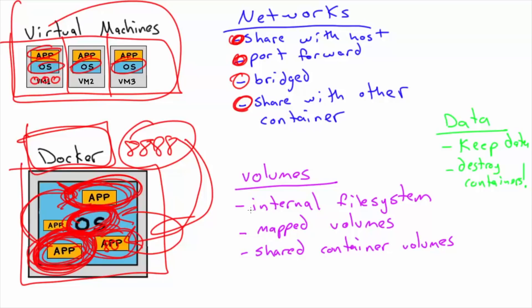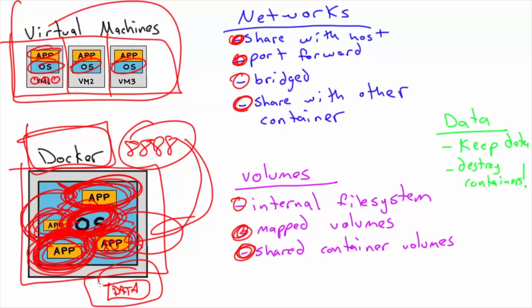There's also volumes. Every app has its own internal file system that's separate from the rest of the system, but you can map folders from the host computer into each individual app. That's really powerful because it allows you to separate your data from the application. You can also do shared container volumes, where rather than an application, you have just data inside a container that doesn't run an app — it's just for storing data, shared amongst the different apps. This lets you destroy containers without messing up your data.